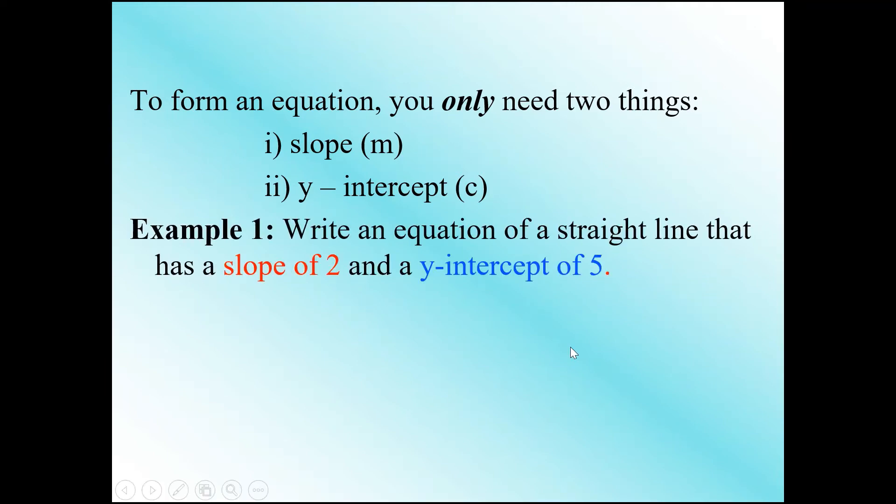Write an equation of a straight line that has a slope of 2 and a y-intercept of 5. In this case we are already given the information that we are after. We will use the general form y equals mx plus c.